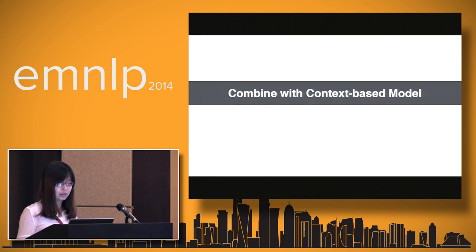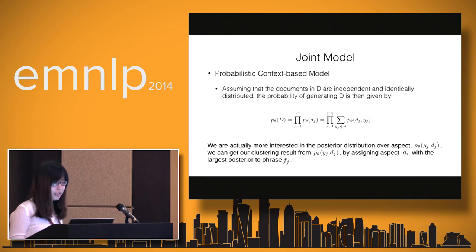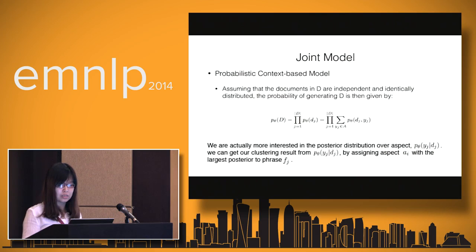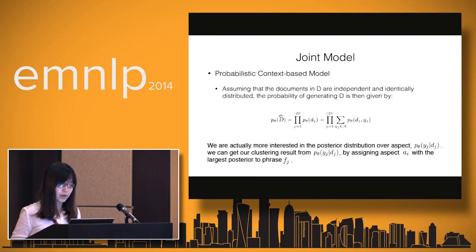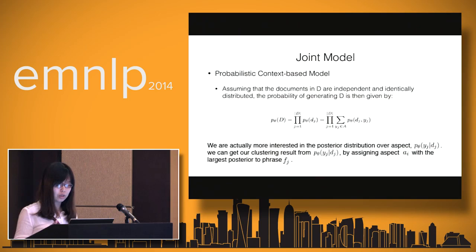Next, we will combine our SDC constraint with the existing context-based model. Here is our joint model. We use a probabilistic context-based model for the context part, assuming the documents in D are independent and identically distributed. Here, D_J represents the context document for phrase J, and Y_J represents which aspect it belongs to. We learn the parameter by maximizing data likelihood — it's an unsupervised method. We are more interested in the posterior distribution over the aspect, and we get our final result by assigning aspect A_I with the largest posterior to phrase F_G.